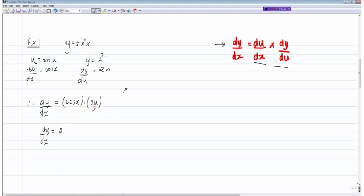And I'll bring this u down. So u is equal to sine x, sine x cos x. So the answer is 2 sine x cos x. So that's example one then. I've got two more examples.